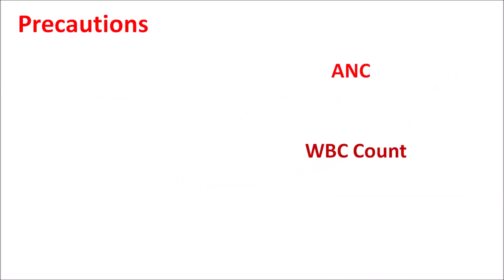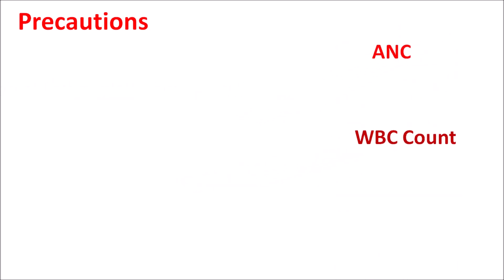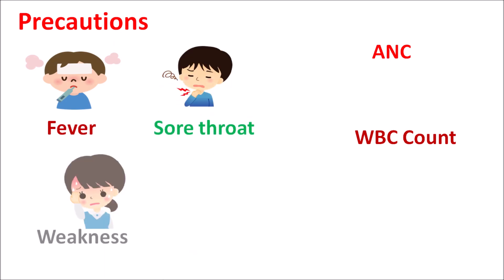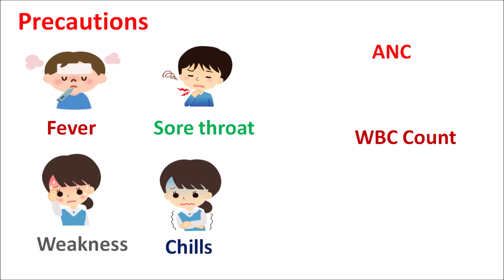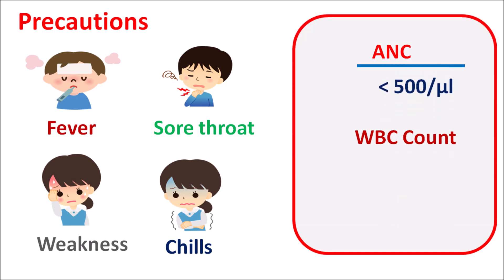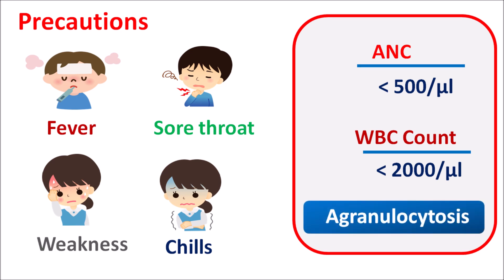These counts should be checked in patients before administration of clozapine. After use of clozapine, the patient may develop symptoms such as fever, sore throat, unexpected weakness, or chills. If these symptoms are observed, a blood test should be done immediately. ANC levels may fall below 500 per microliter and WBC count may fall below 2,000 cells per microliter. In such conditions, the drug should be immediately stopped, as this indicates the development of agranulocytosis. Clozapine may cause agranulocytosis, resulting in neutropenia and leukopenia.